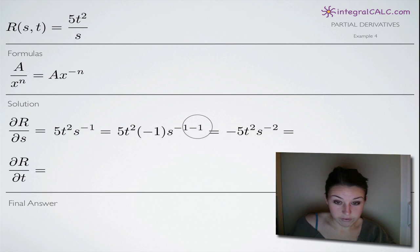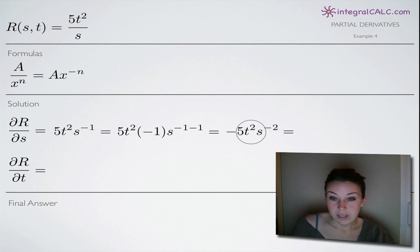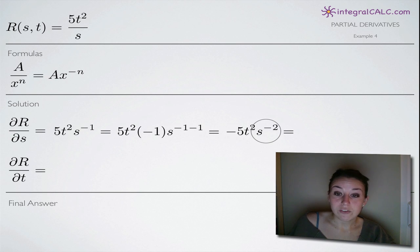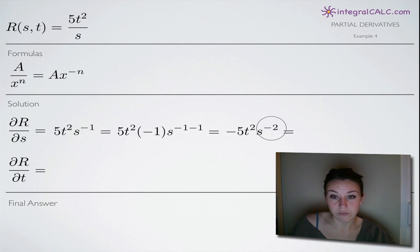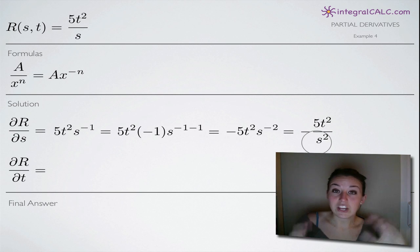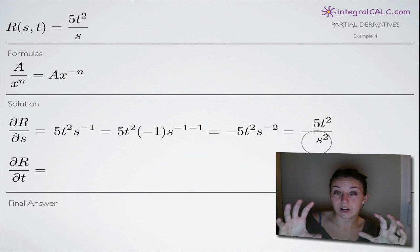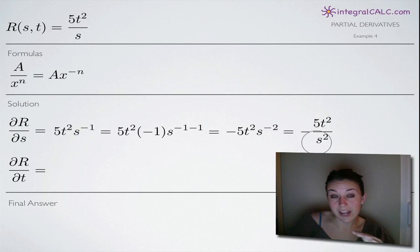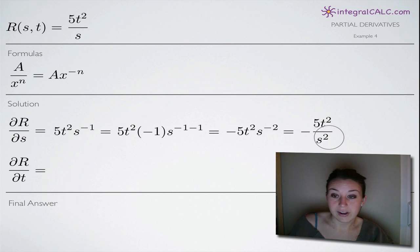It's just a matter of simplification. We have negative five out in front because negative one times five gives us that, then t squared stays, and we have s to the negative two from negative one minus one. You never want to finish a problem with a negative exponent if you can avoid it, so we move that s term to the denominator using the same formula. The negative exponent becomes positive, and we end up with negative five t squared over s squared.